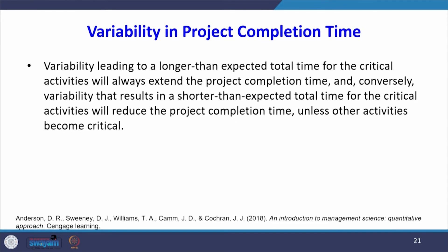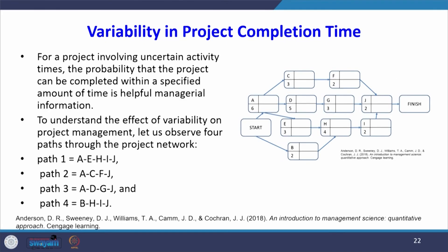Generally, we are concerned about activities in the critical path. Variability leading to a longer than expected time for critical activities will always extend the project completion time. Conversely, shorter than expected times for critical activities will reduce the project completion time unless other activities become critical. Whenever we provide the mean total completion time, we must also provide the variance.